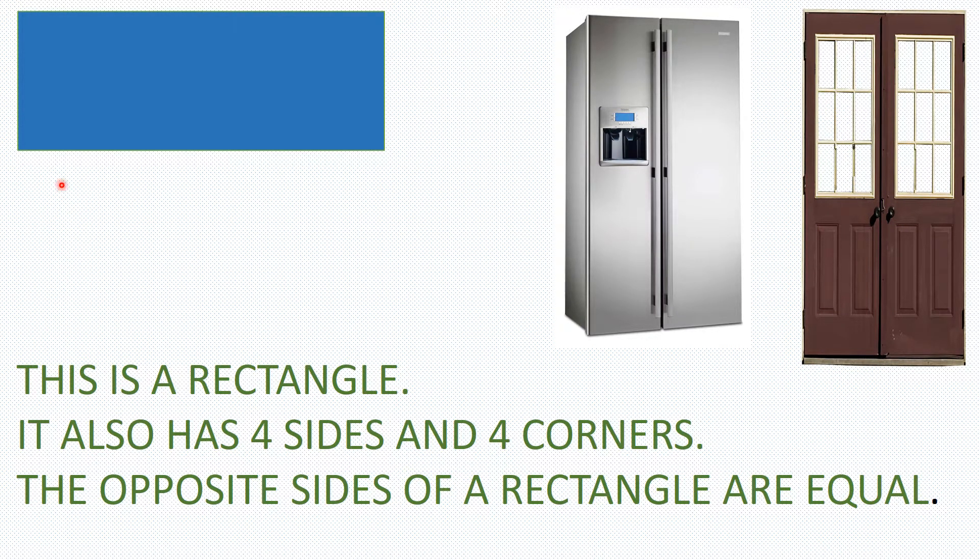This is a rectangle. It also has four sides and four corners. The opposite sides of a rectangle are equal. Look here students. This is a rectangle. See, the opposite are different. This side is short and this side is long.